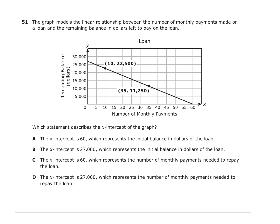Number 51: The graph models the linear relationship between the number of monthly payments made on a loan and the remaining balance. Which statement best describes the x-intercept? The x-intercept is at 60, so it's either A or C — B and D have the wrong intercepts. Answer C says the x-intercept of 60 represents the number of monthly payments needed to repay the loan, which is correct. Answer A incorrectly says it represents the initial balance. So the answer for 51 is C.